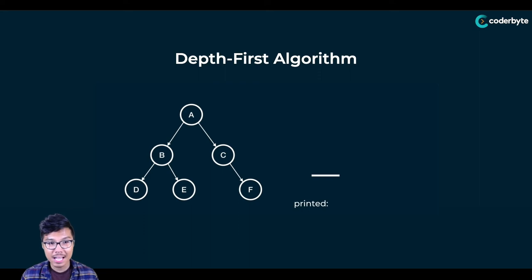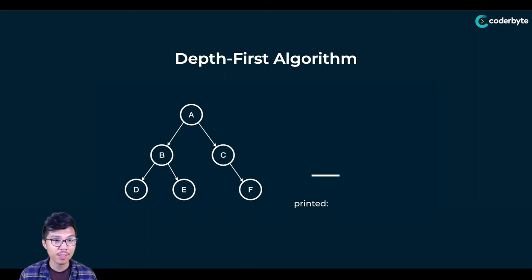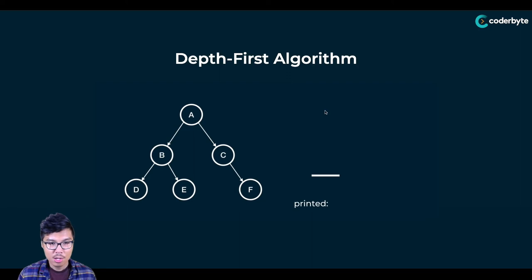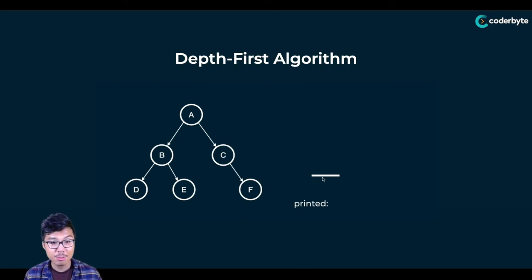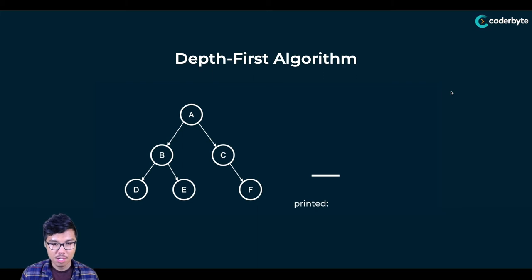Recall that in a stack, we either add things to the very top or remove things from the top. As I trace through a depth first traversal on this tree, I'll keep track of my stack — this line represents the bottom — and throughout, as we visit different nodes, we'll print them out. We'll start by initializing the stack with just the root node.